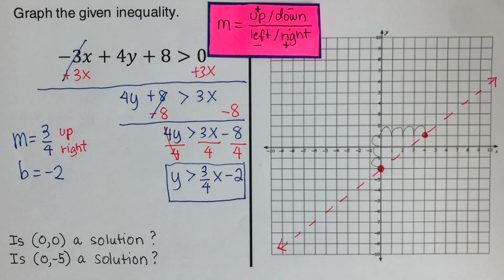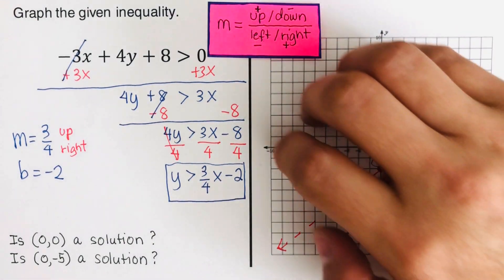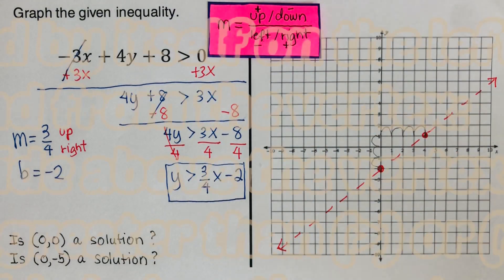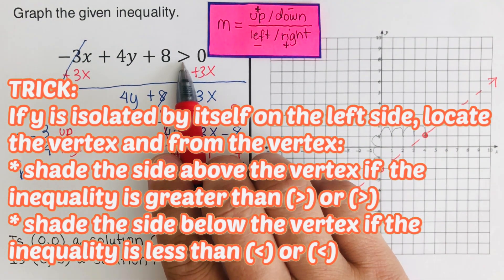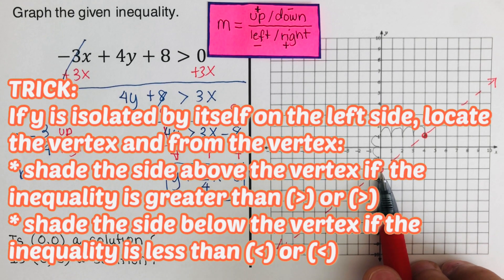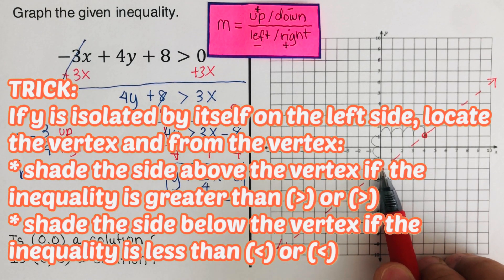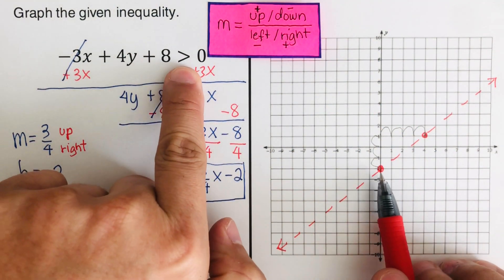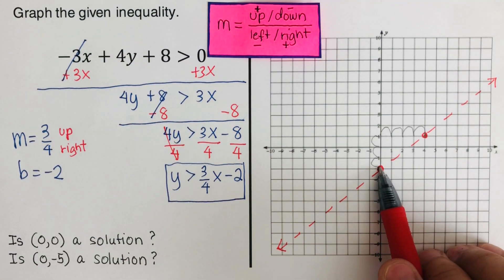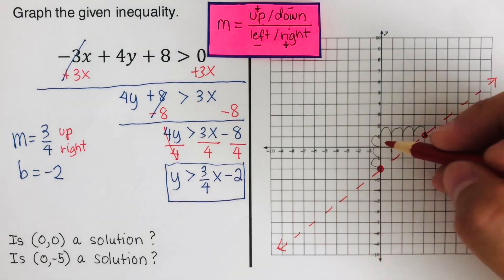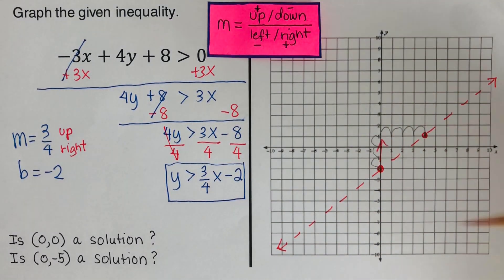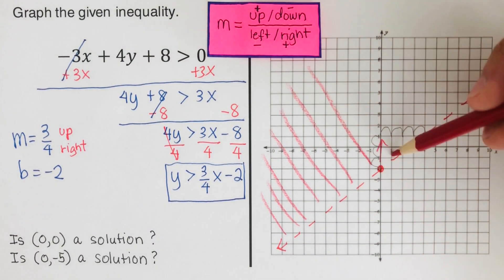Since this inequality is greater than with no bar underneath, I draw a broken line. Now for shading: greater than means we shade above the y-intercept point, so I shade the portion above the line.